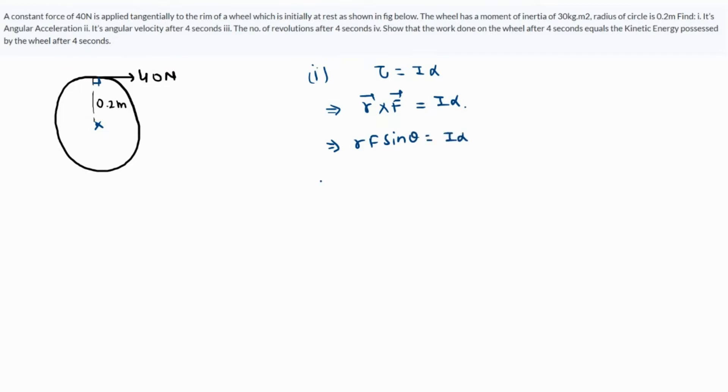Let's substitute the values. R is 0.2, F is 40, θ is 90, I is the moment of inertia which is 30, and α is what we have to find. On the left hand side, 0.2 times 40 times sin 90 - sin 90 is 1 - so 8 = 30α. Dividing both sides by 30, we have 8 over 30 as α.